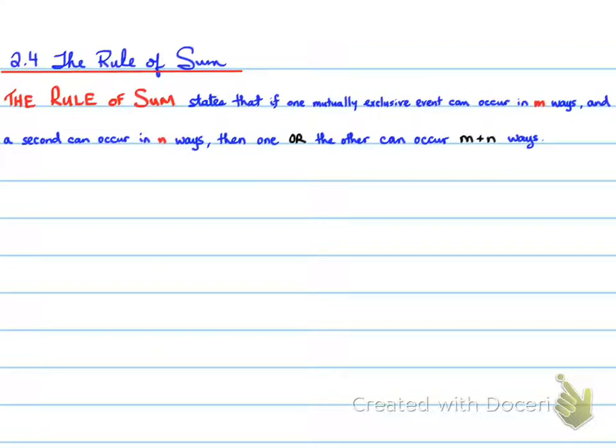The Rule of Sum, section 2.4. The Rule of Sum states that if one mutually exclusive event can occur in M ways and a second can occur in N ways, then one or the other can occur in M plus N ways.